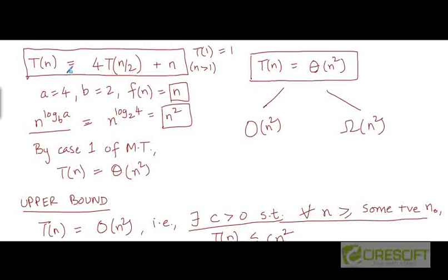Let's use the Master Theorem to solve this recurrence. Here a = 4, b = 2, and f(n) = n. Computing n^(log base b of a) gives n^(log base 2 of 4) = n². Comparing n^(log_b(a)) with f(n), we see that n² is polynomially larger than n, so we are in Case 1 of the Master Theorem. Case 1 tells us the solution is Θ(n^(log_b(a))), so T(n) = Θ(n²).